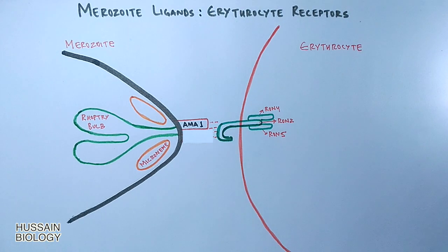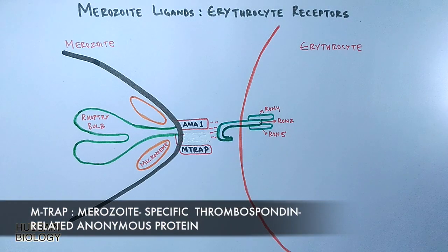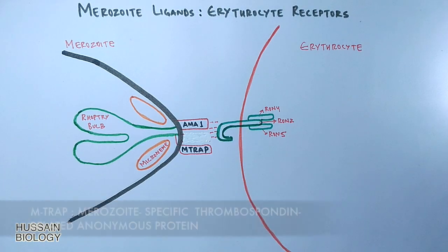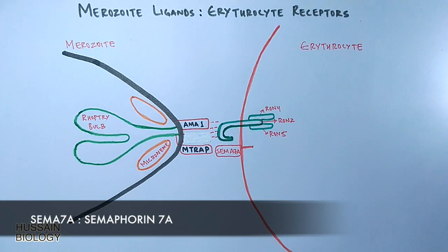Then Plasmodium has another ligand called M-trap, merozoite-specific thrombospondin-related anonymous protein. It interacts with SEMA7A receptors of erythrocyte, semaphorin 7A.